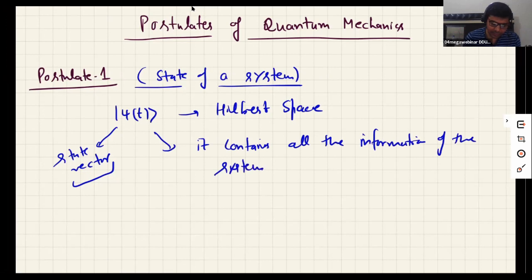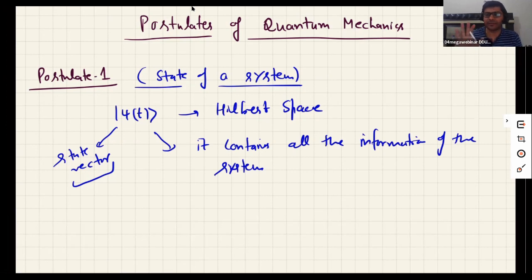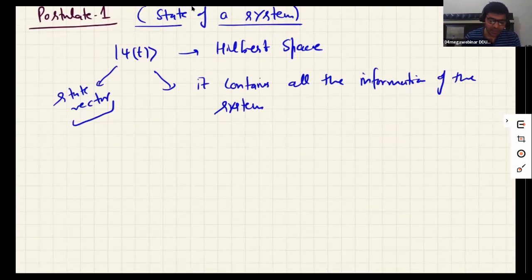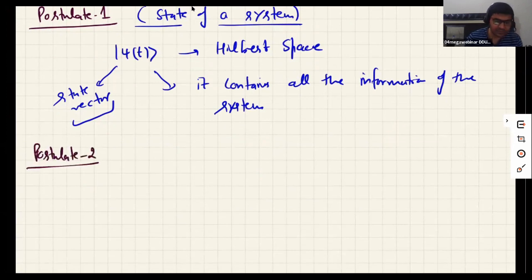Now it is up to us which information we want to extract from it. It has all the information, and it is our job to figure out how to extract that information. The second postulate, which is a very important one, talks about the physical quantities — the physical observables.